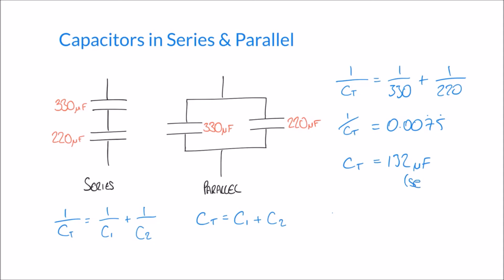So that was for our series arrangement of capacitors. Let's repeat this again for our parallel arrangement, because we know that for parallel capacitors, we just have to add the capacitances together. So we can say that CT is equal to 330 plus 220.